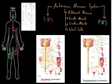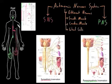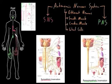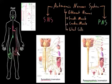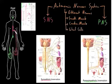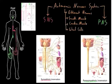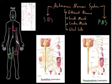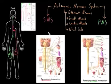The similarities in structure are that both the SNS and PNS usually consist of a chain of two neurons connecting the central nervous system to the target cell. The differences are where those first neurons start, and whether there's a short first axon and long second axon, or a long first axon and short second axon. More importantly than these structural differences are the functional differences.